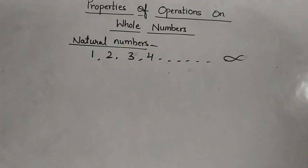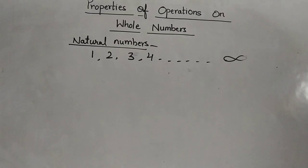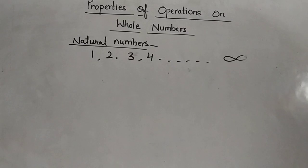Now, one question: how many children are there in class 6 who are more than 20 years old? Your answer will be 0. Now the question is: is 0 a natural number? No, 0 is not a natural number.